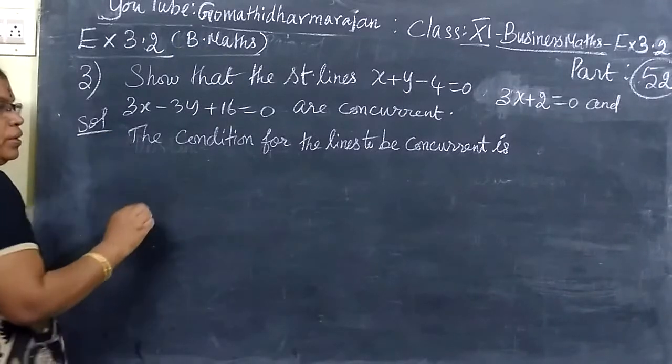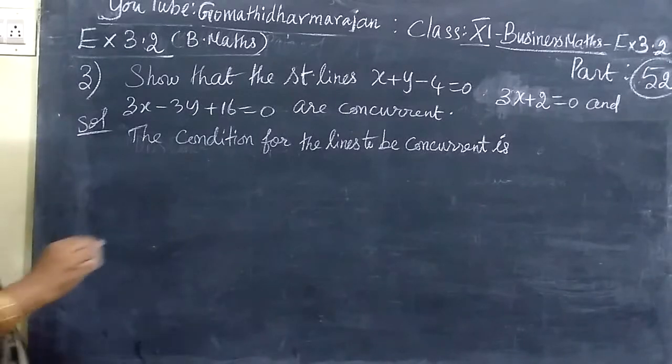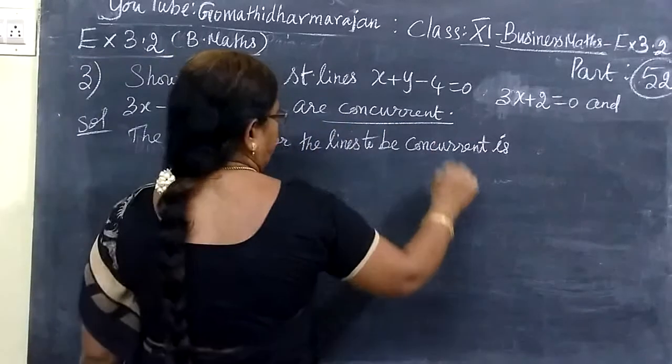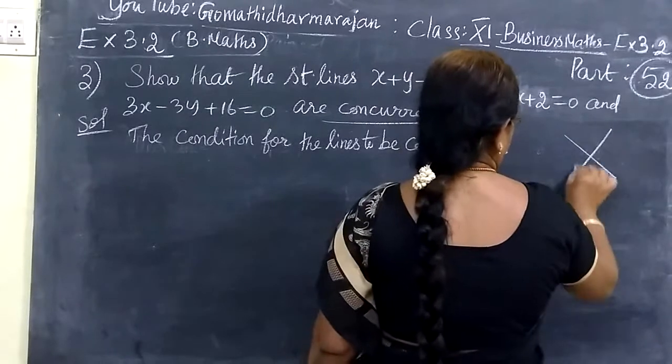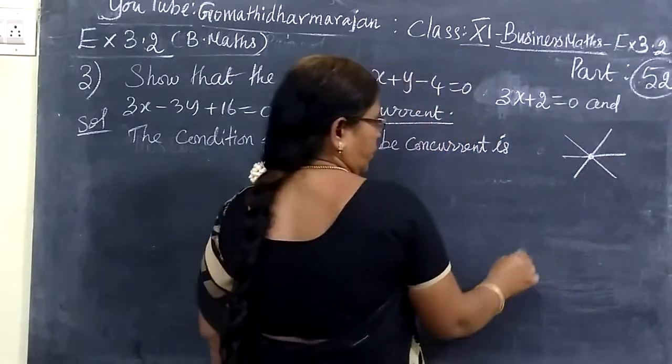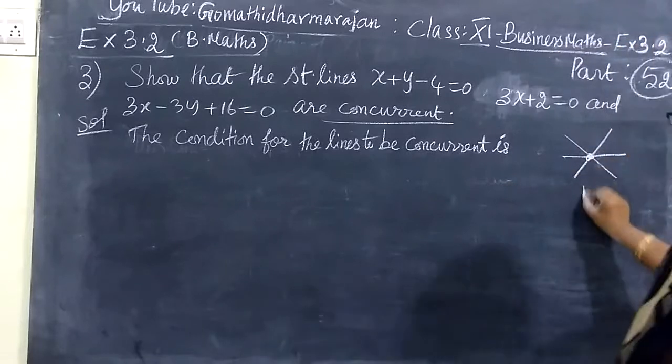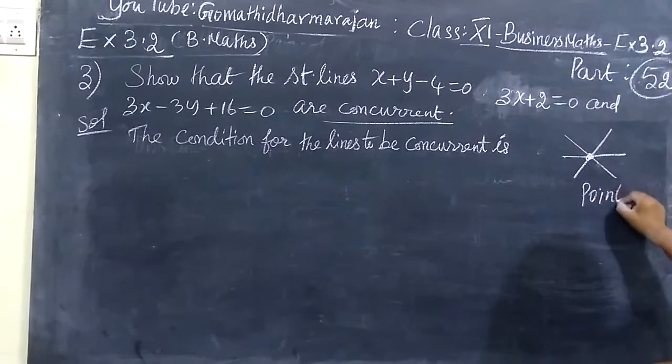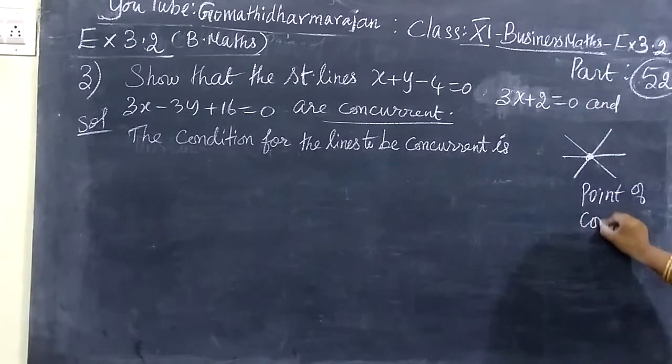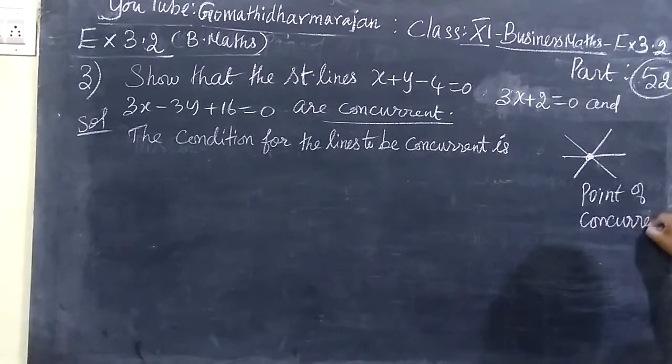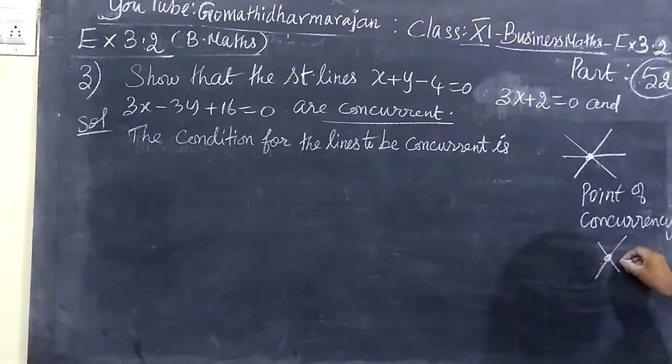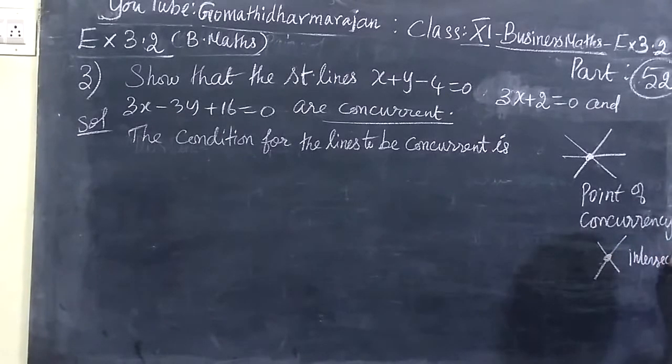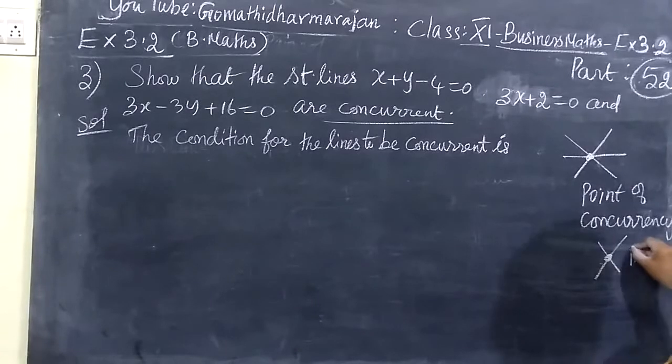Equation of 3 straight lines. You want to prove they are concurrent. Concurrent means they are passing through the same point. This is the point of concurrency. Point of intersection are only 2 straight lines. It is the intersecting point.